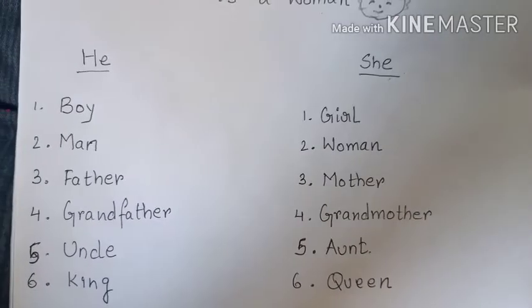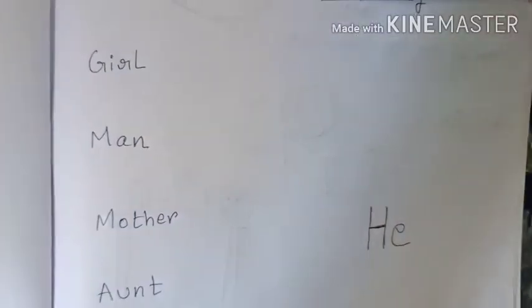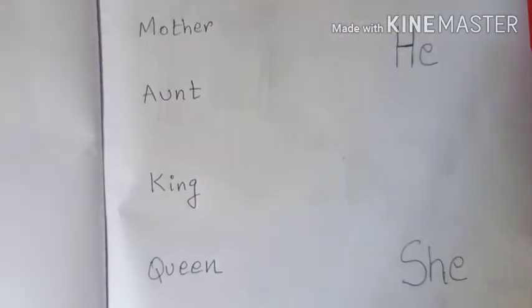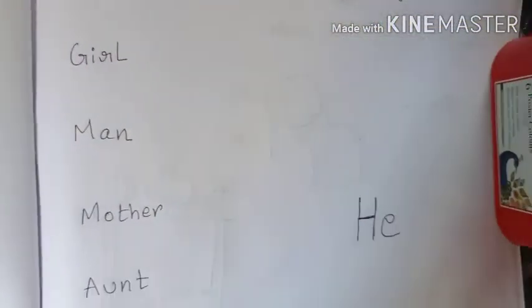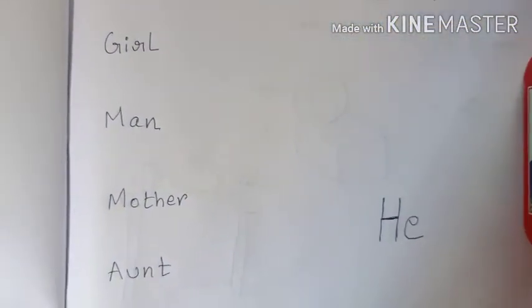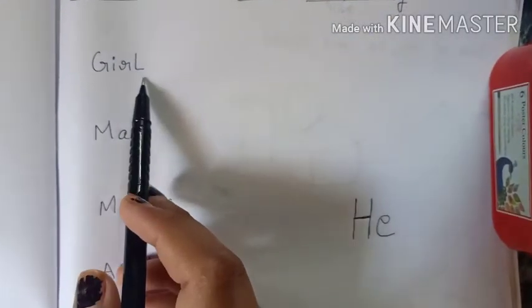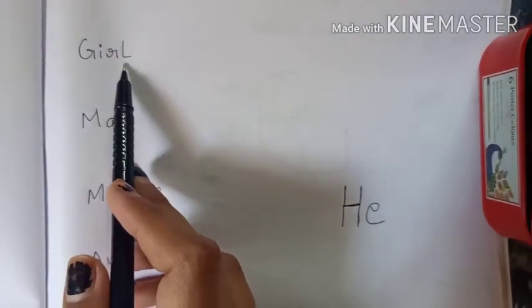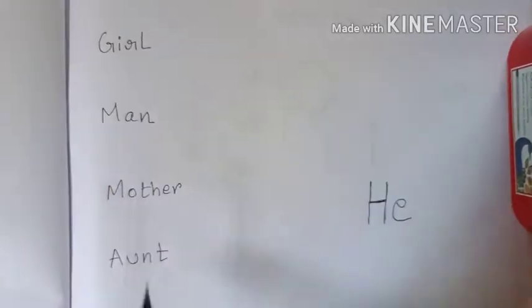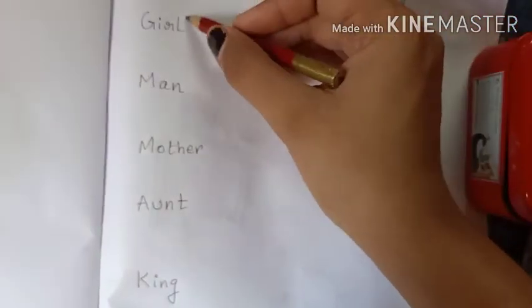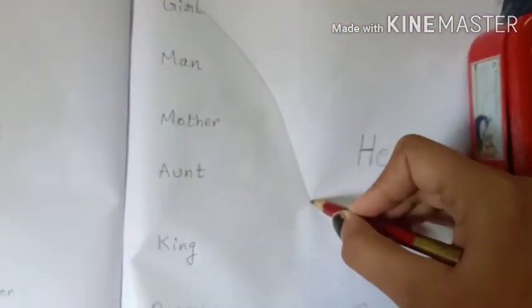Okay students, let's solve our worksheet now. There are a few names written on the left side, and two words — 'he' and 'she' — on the right. You have to read and match. The first word is 'girl' — what do we use? She. So girl will match to 'she'.